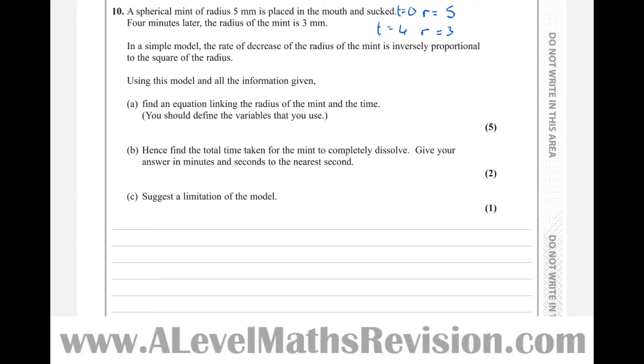So just making notes of that as we read the question. It says, in a simple model, the rate of decrease of the radius of the mint is inversely proportional to the square of the radius. So that's telling us that dr by dt, the rate of decrease of the radius, is inversely proportional, so is equal to k over the square of the radius. So k over r squared.